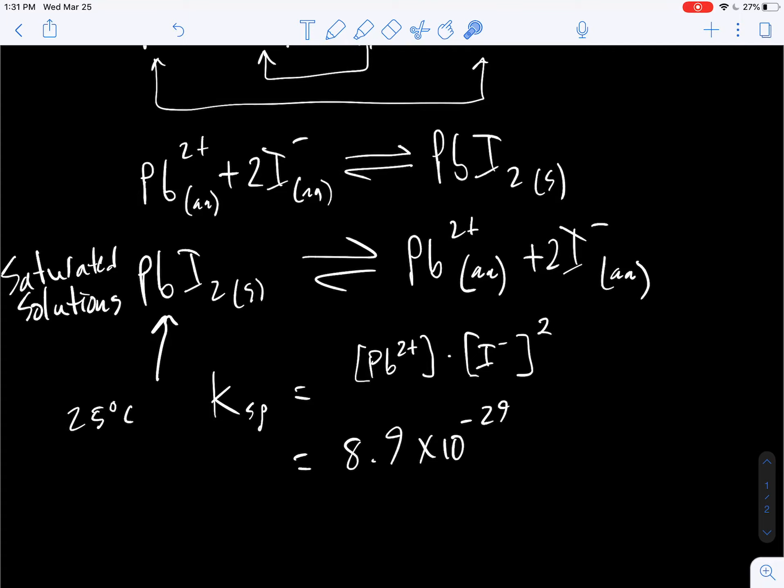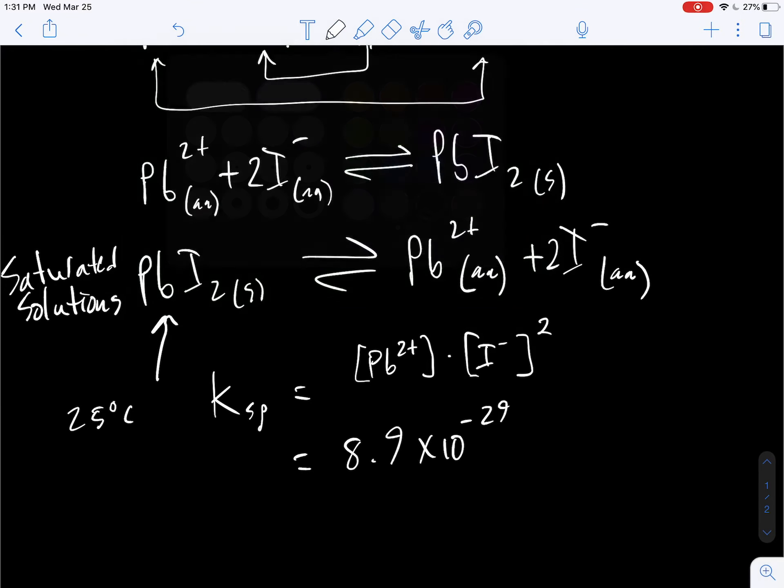That's why we say when lead and iodide come together, it heavily favors precipitate. These compounds are not going to be broke up in solution. So this really small value really shows why we consider this almost like a forward arrow and not an equilibrium.